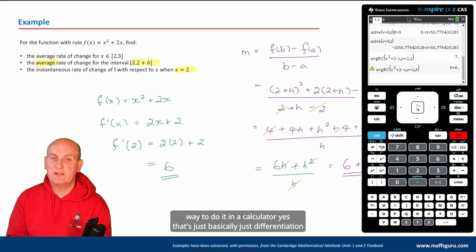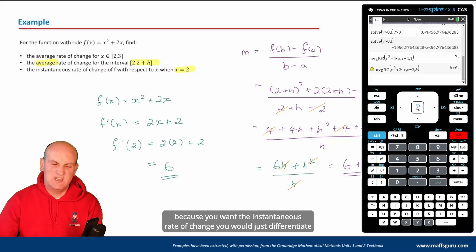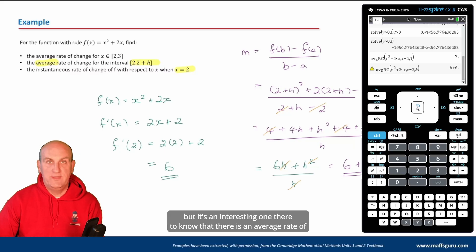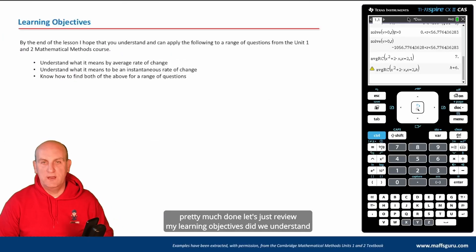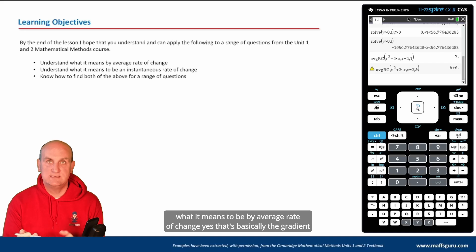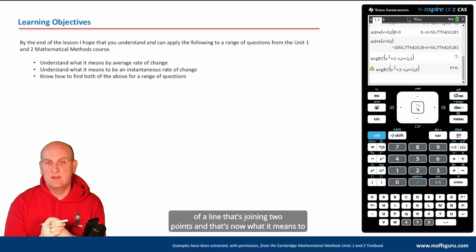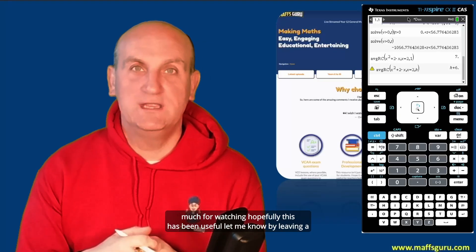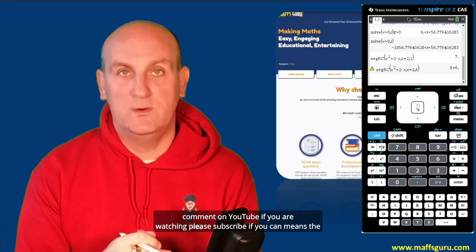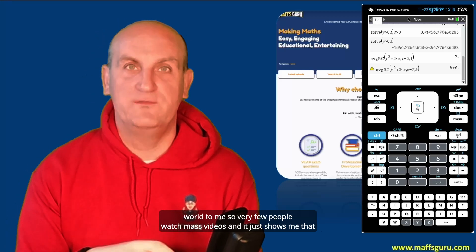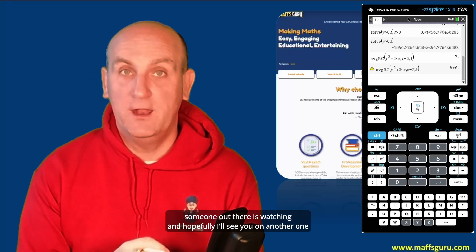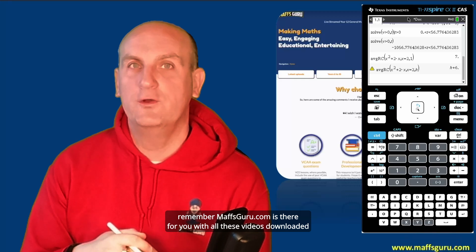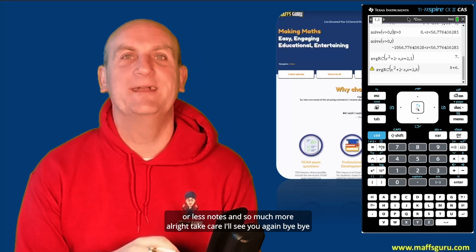For part c — instantaneous rate of change — just differentiate, since the average rate of change function on the calculator is for intervals. Let's review our learning objectives: average rate of change is the gradient of a line joining two points — yes. Instantaneous rate of change is the gradient of a tangent at a particular point — yes. And we know how to find both for a range of questions. Thank you very much for watching — please subscribe if you can, and remember mathsguru.com has all these videos, downloadable lesson notes, and more. Take care, bye bye.